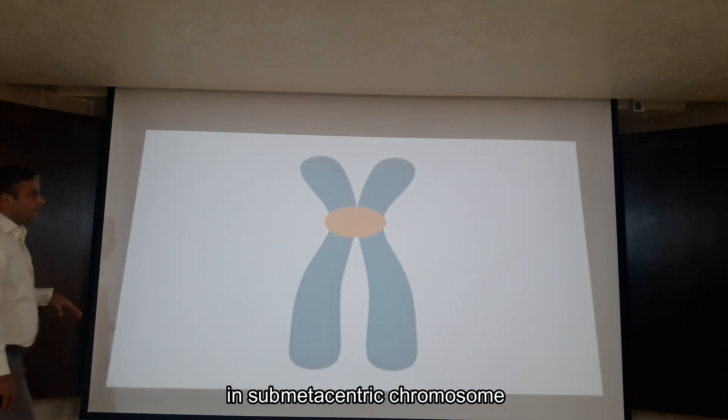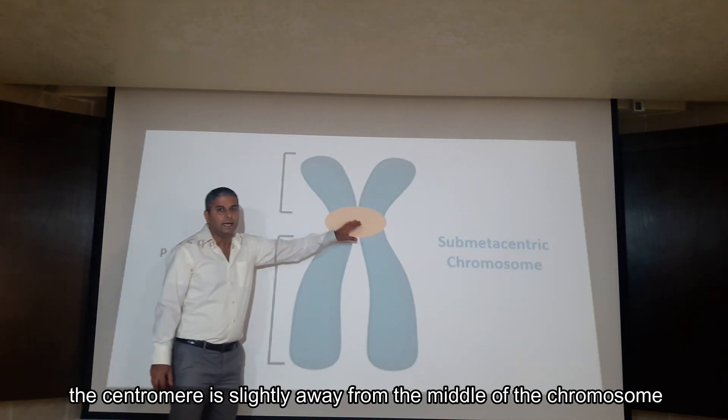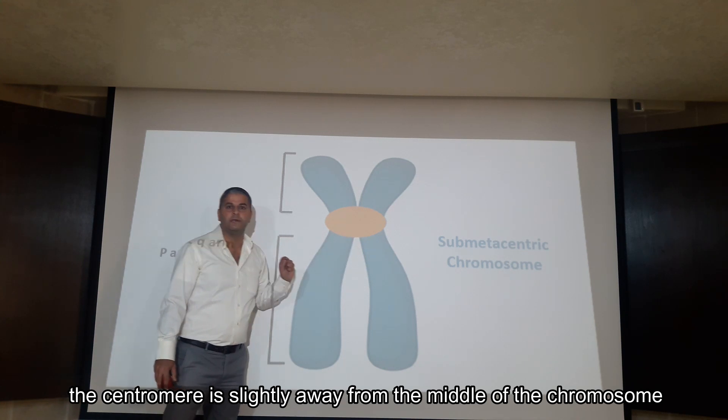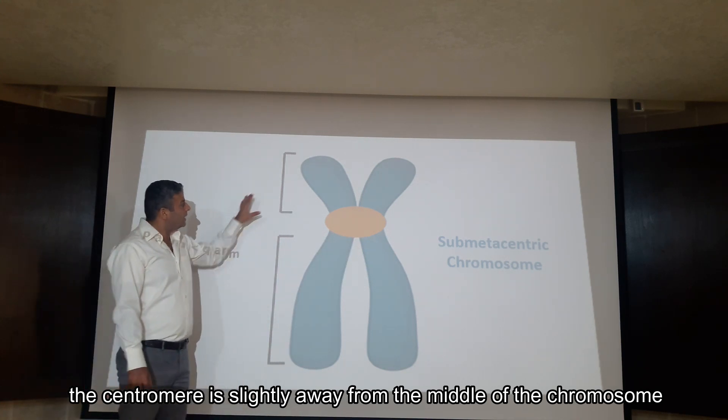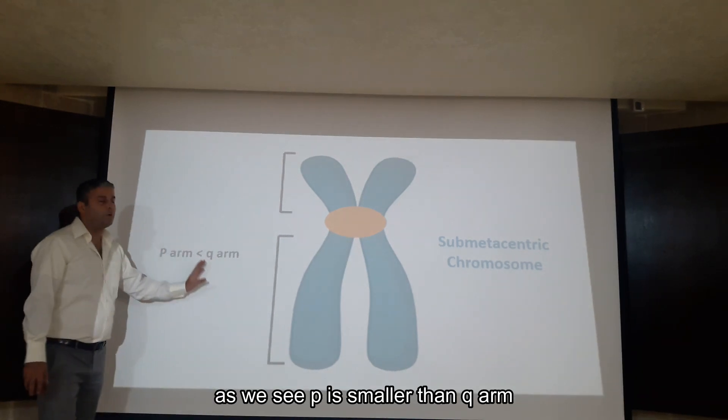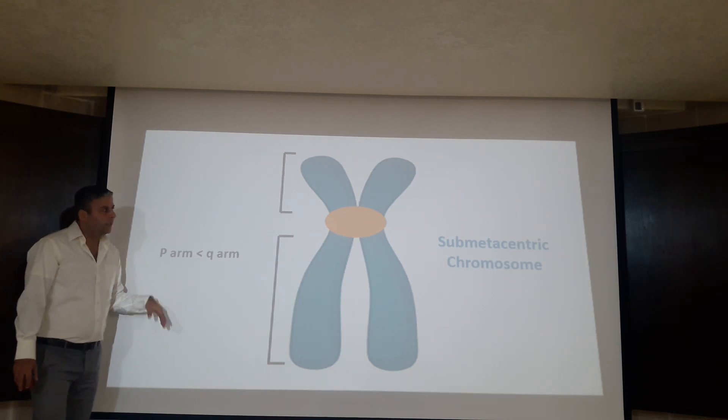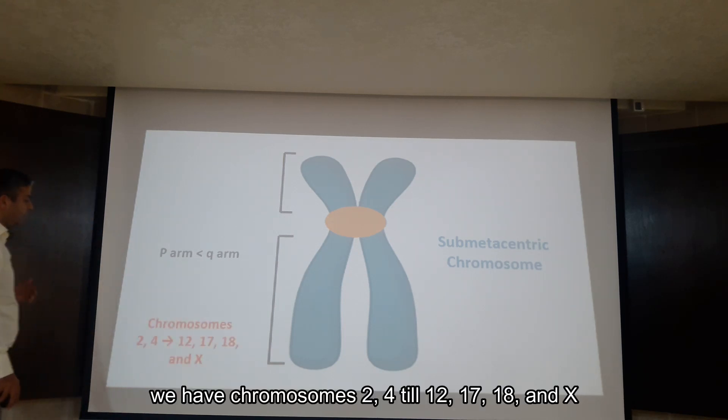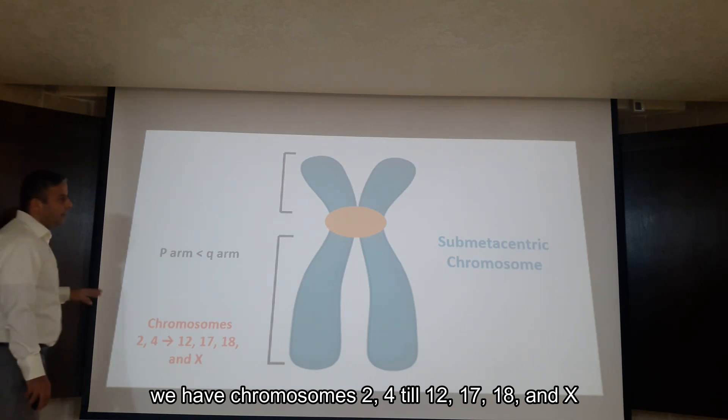In submetacentric chromosomes, the centromere is slightly away from the middle of the chromosome. As you see, P is smaller than Q. Examples? We have chromosomes 2, 4-12, 17, 18 and X.